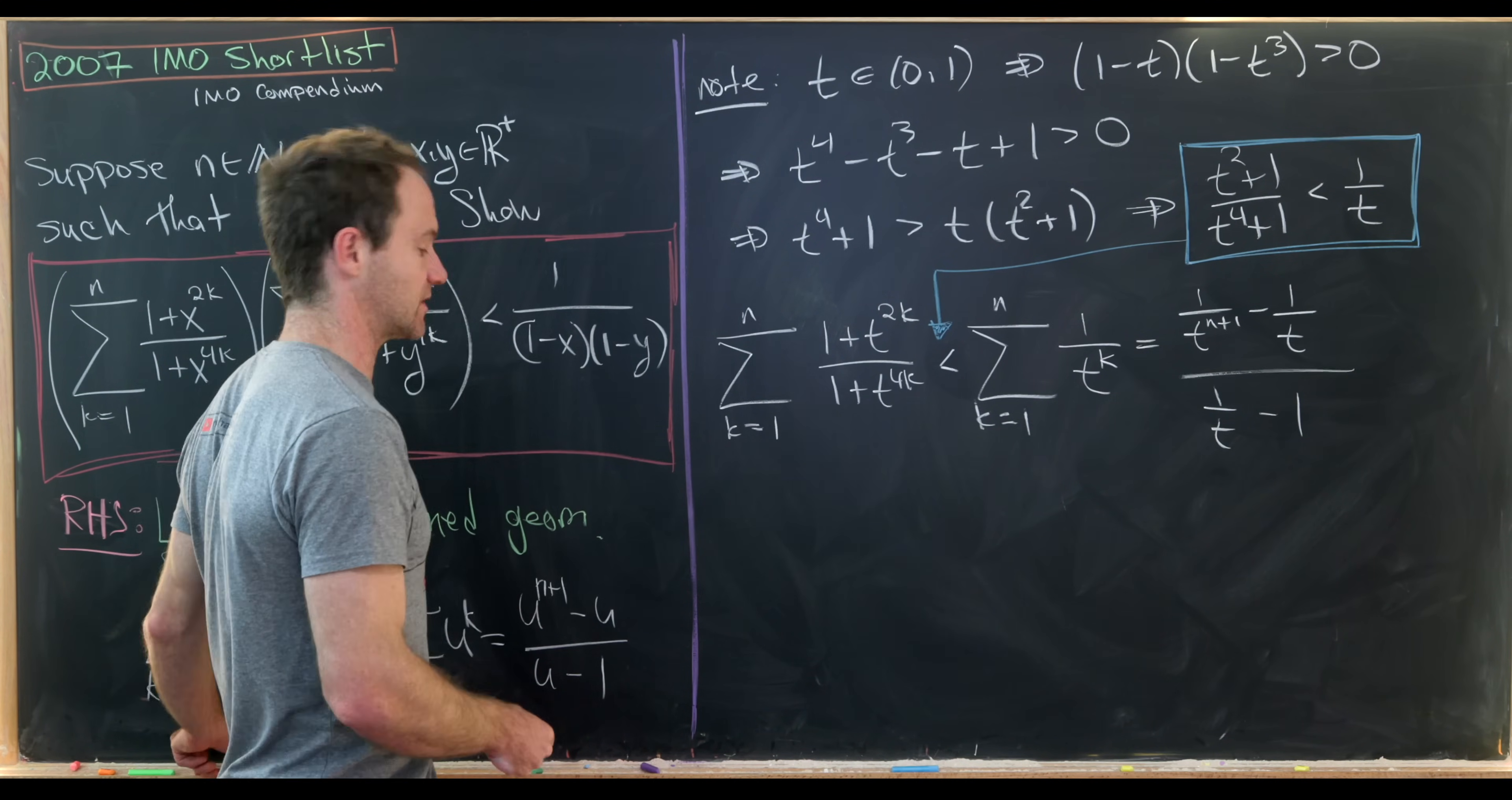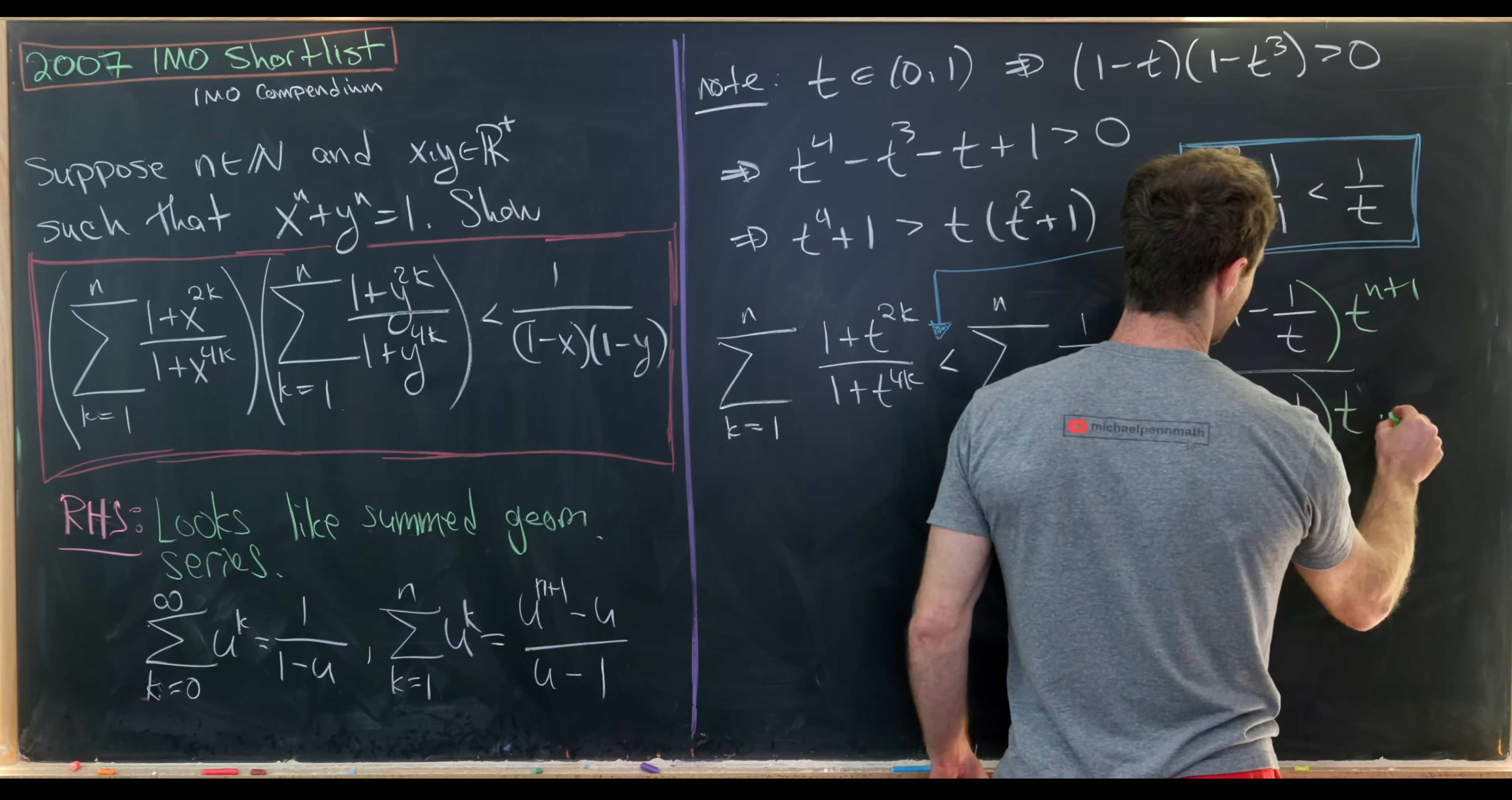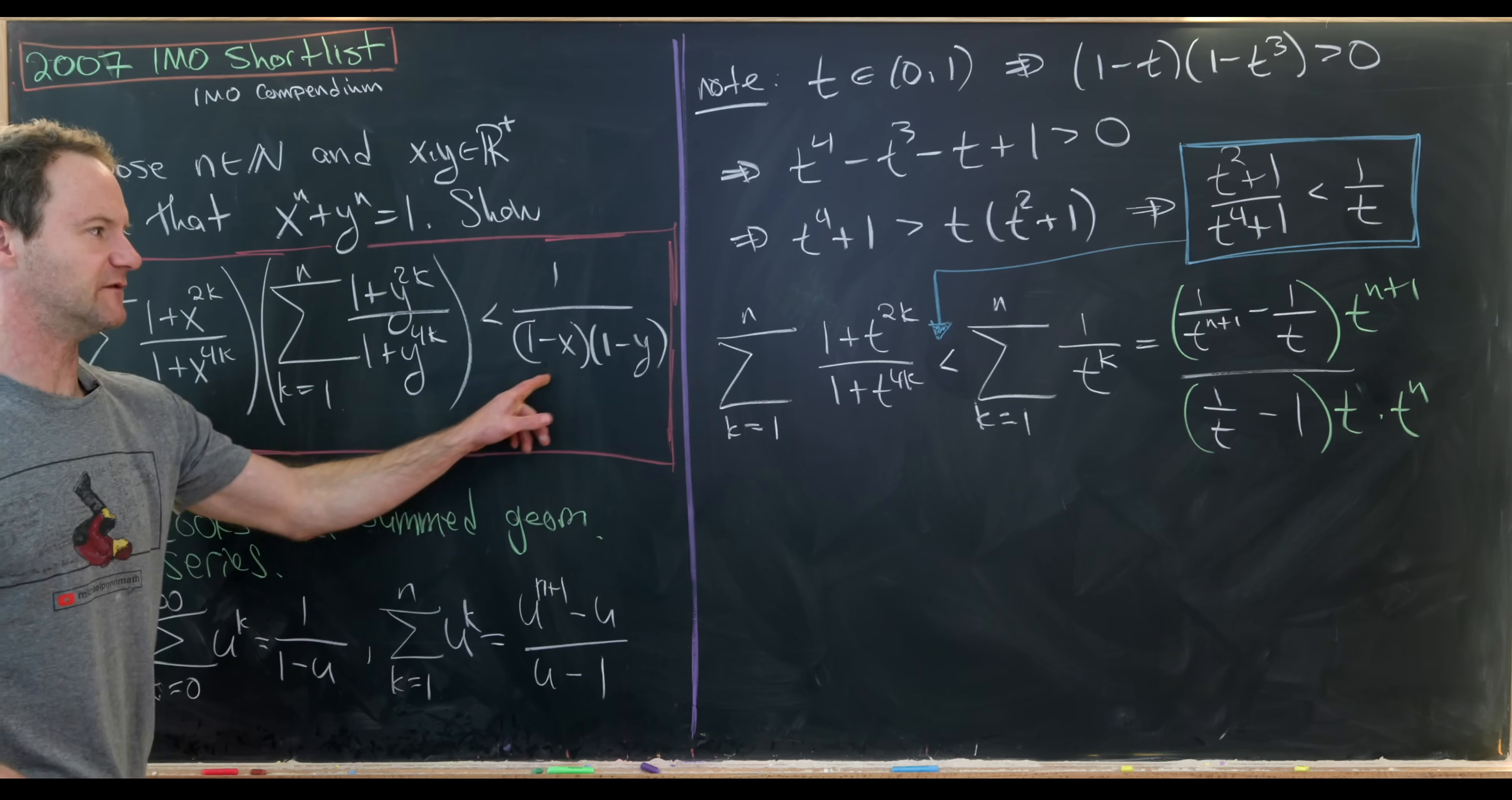So maybe we can make it look a little nicer by multiplying the numerator and the denominator by t to the n plus 1. That'll cancel out everything that I need. But in the denominator, I'll do it as t times t to the n. Because if I multiply by t, I get something that looks like one of these terms.